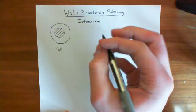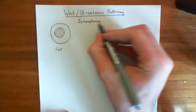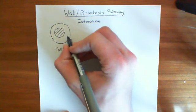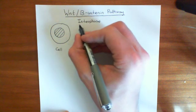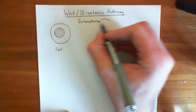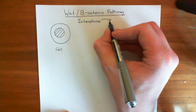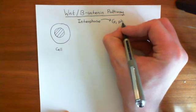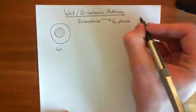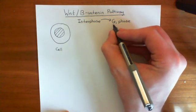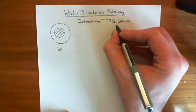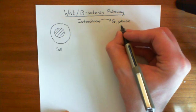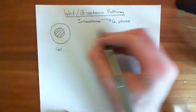Interphase is when a cell is sitting and not dividing at all, a huge, long period between divisions. Then to actually start dividing, it will go into G1 phase, the first growth or gap phase. That's a phase where you start producing a lot of the proteins associated with division of the DNA, of the genome.